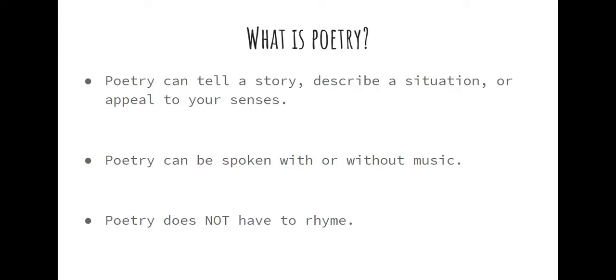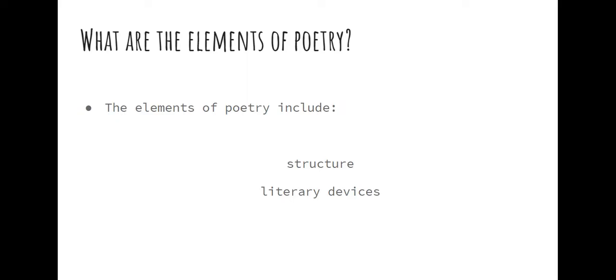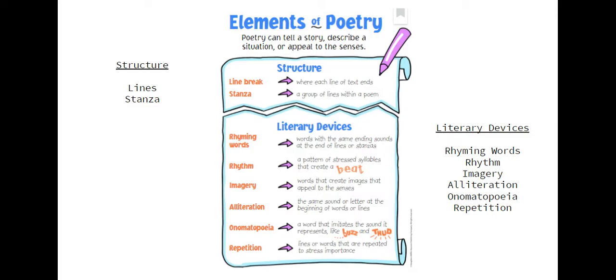What are the elements of poetry? There are two big elements of poetry which include structure and literary devices. As you can see on the next slide, they break down into smaller parts. The structure of a poem includes the lines and the stanza. The literary devices include the rhyming words, the rhythm, imagery, alliteration, onomatopoeia, and repetition.